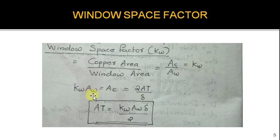We know A_c is 2AT by delta. From this we will get AT as k_w A_w delta by 2.